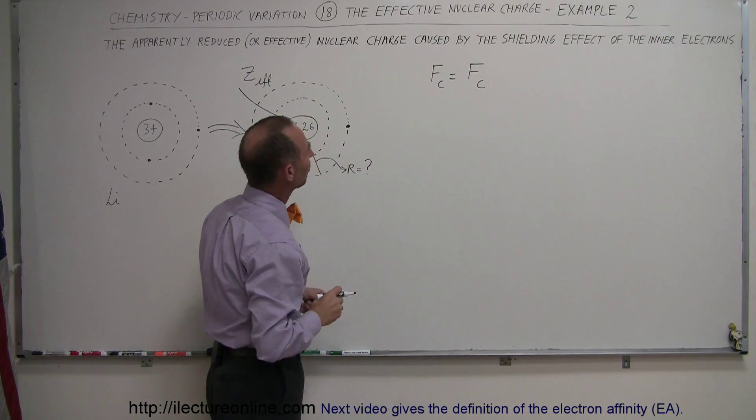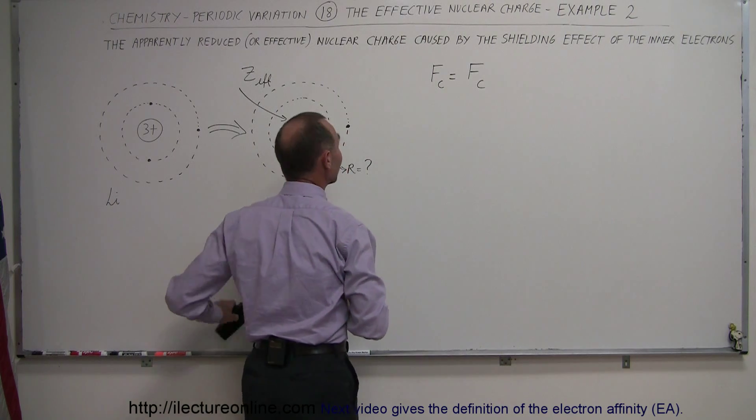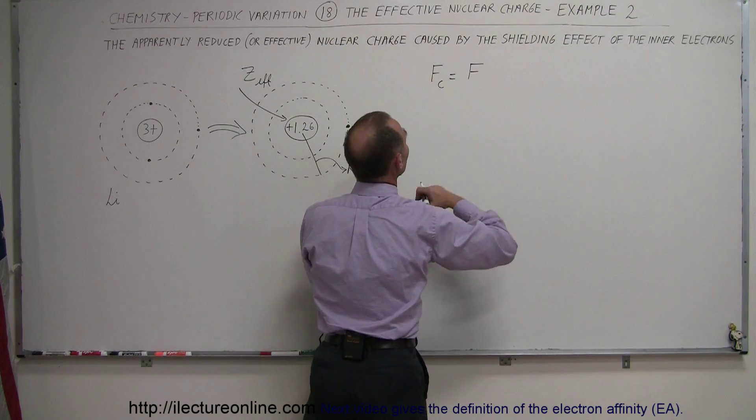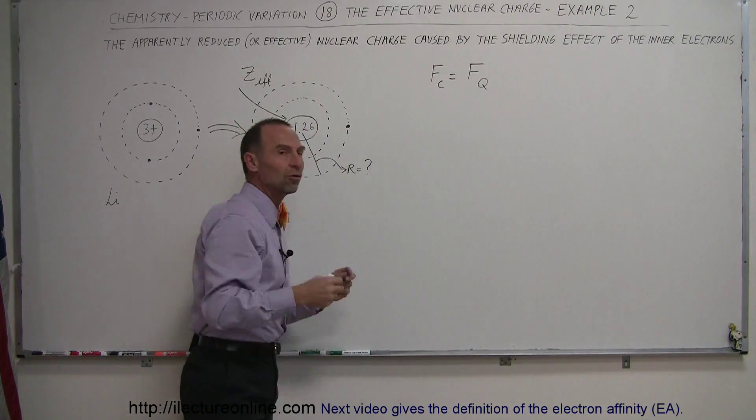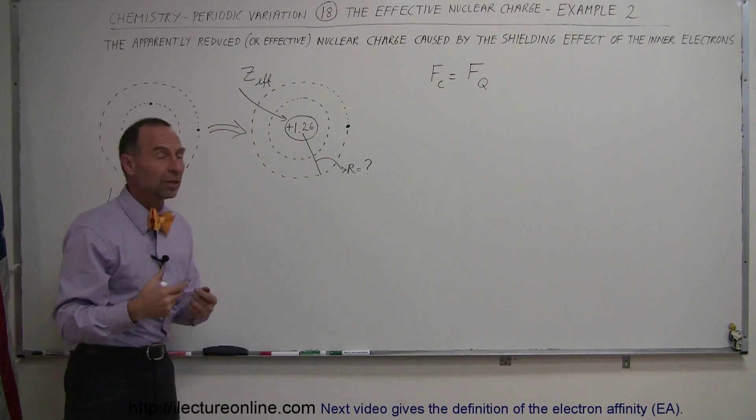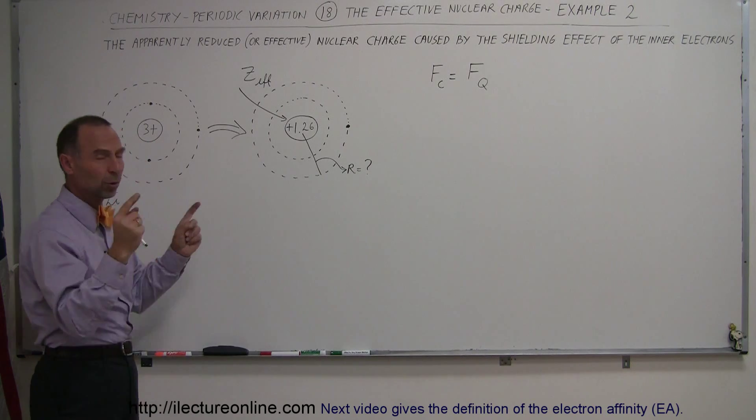Let's just use Q for charge. So the force due to the centripetal motion is actually equal to the Coulomb force, the force of attraction between the two charges. We have a positive charge there, we have a negative charge there, and they attract each other.